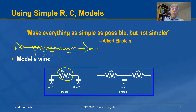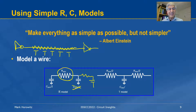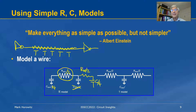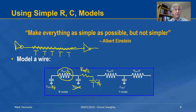If you want even more accurate models, you can take two of these pi segments back to back. The capacitance in the center stays C_wire over two, the outer capacitances become C_wire over four, and each resistance becomes R_wire over two. That will give you a little better estimate, but it's surprising how accurate just a single segment can be for simple timing estimation.